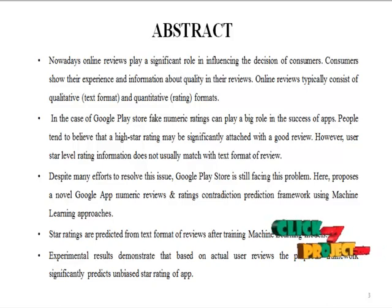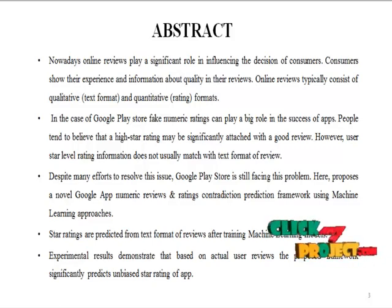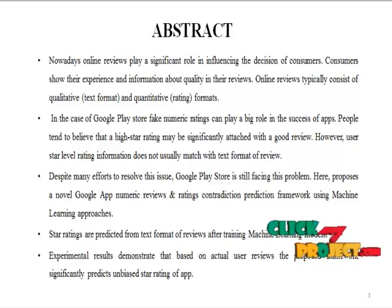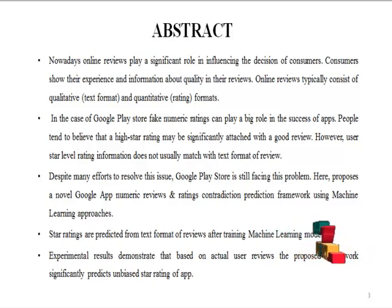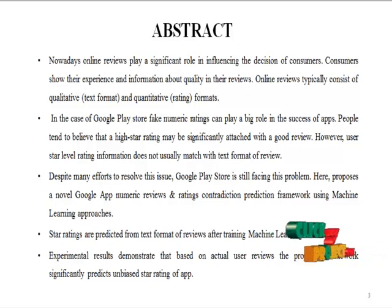This project proposes a novel Google App Numeric Review and Rating Contradiction Prediction Framework using Machine Learning approaches. Star ratings are predicted from the text format of reviews after training a machine learning model. Experimental results demonstrate that, based on actual user reviews, the framework significantly predicts unbiased star ratings of apps.